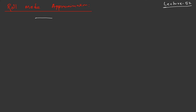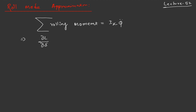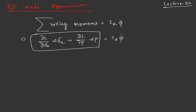The rolling moment is basically stabilizing the aircraft orientation along the x-axis. The total moment due to the rolling rate and aileron deflection can be written as: ∂L/∂(delta_A) · Δ(delta_A) + ∂L/∂P · ΔP = I_x · P_dot, and this is the total rolling moment acting along the x-axis.